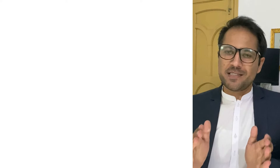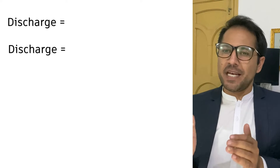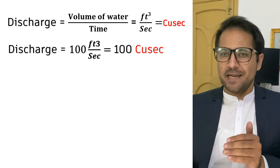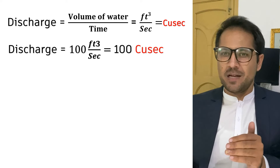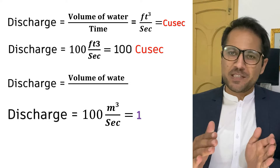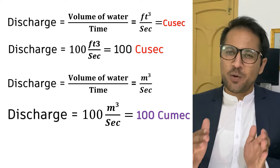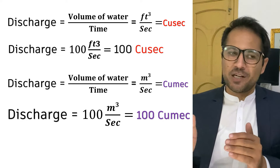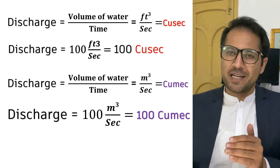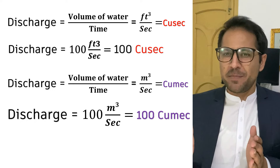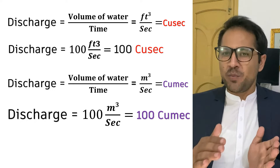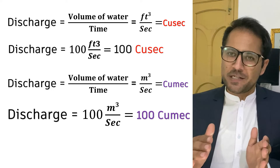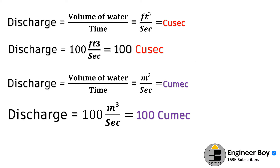Now, if discharge is measured in cubic feet per second, that means QSIC. And if discharge is measured in cubic meters per second, then that means, in short terms, QMIC. So QSIC means cubic feet per second and QMIC means cubic meters per second.